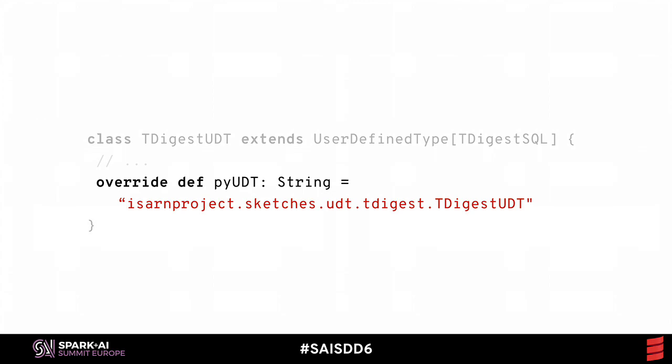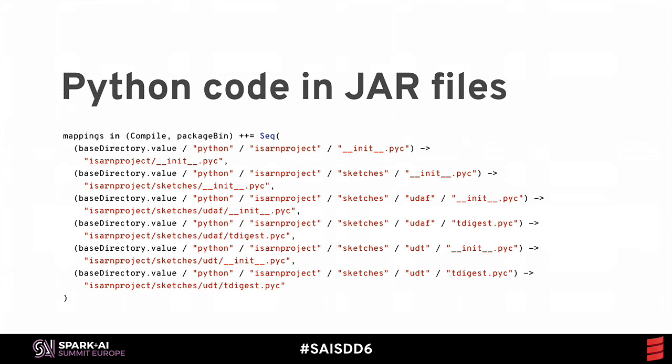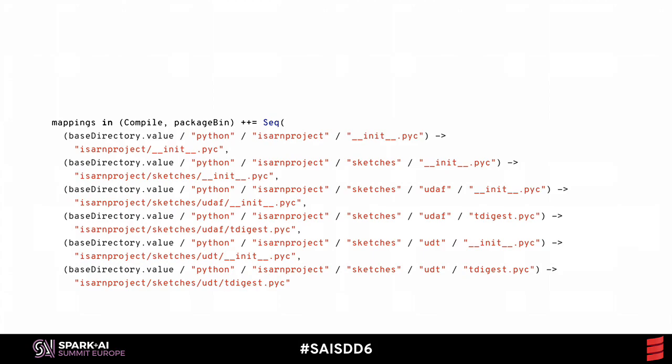Recall that a Scala user-defined type can supply the name of a PySpark counterpart. So here is where this PyUDT method I mentioned earlier becomes mandatory. Now I'm going to show you how to take advantage of a clever trick that Spark knows: Spark can actually find compiled Python files in a Maven jar file and load both the Python and the Scala classes in the right places, allowing your users to apply your library in either Spark or PySpark from a single Maven file.